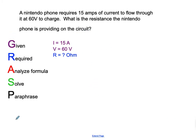And so what we have here is the GRASP method. You write down what's given, required, analyze the formula, solve the problem, and paraphrase. I strongly suggest that you go through every single physics formula with the following procedure: write down what's given, write down what's required, analyze the formula, solve the problem, and then paraphrase. This will train your brain in physics.